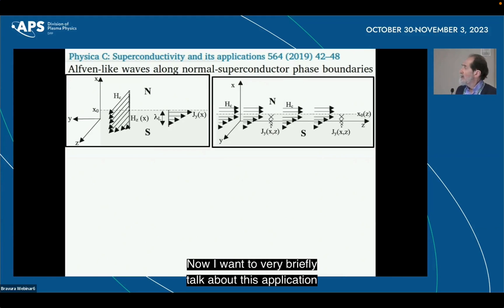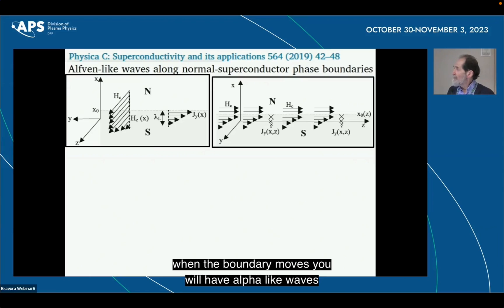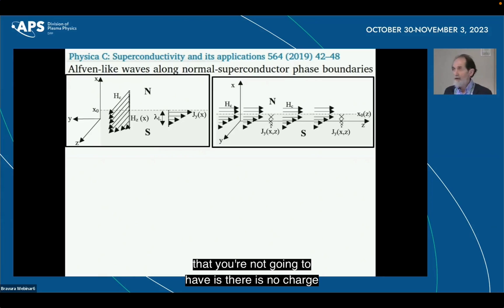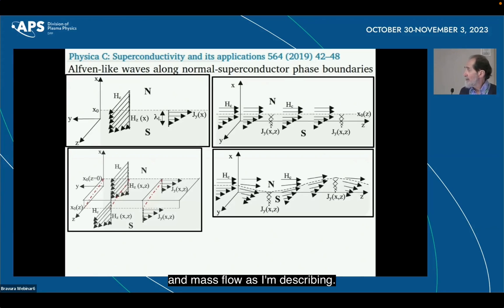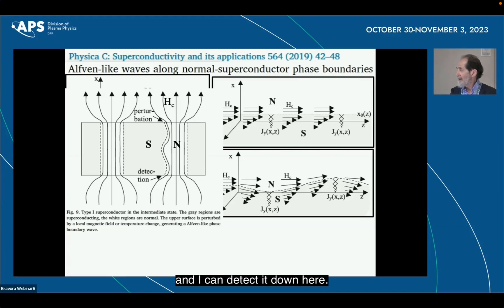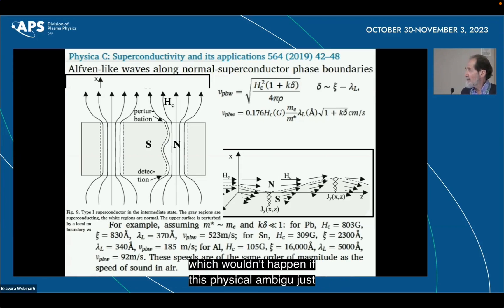Now, I want to very briefly talk about this application of these ideas that say that because you have charge flow between superconducting normal regions in a magnetic field, when the boundary moves, you will have Alfven-like waves along phase boundaries. And that's a prediction of this physics that you're not going to have if there is no charge and mass flow as I'm describing. So you get these waves that basically say that if I have a system like this, where I have superconducting and normal regions, where there is a magnetic field, and I perturb it, let's say over here, there's a wave that's going to be propagating and I can detect it down here. And this can be tested experimentally, but it hasn't been tested. And so in particular, you can calculate, for example, the speed at which this wouldn't happen if this physics were not valid.